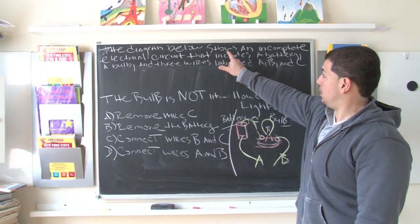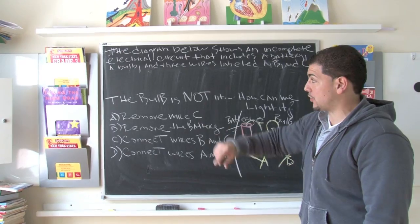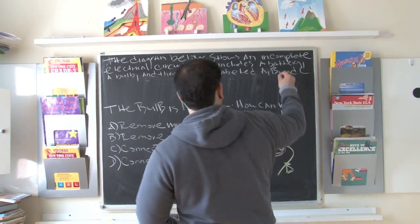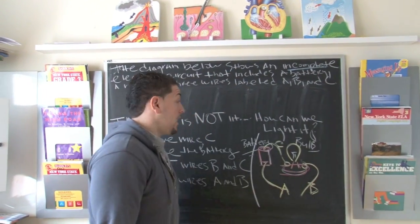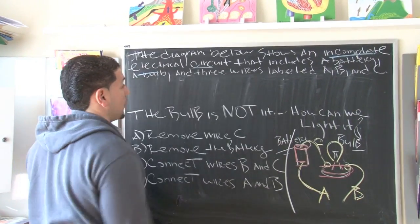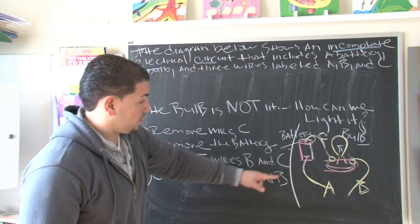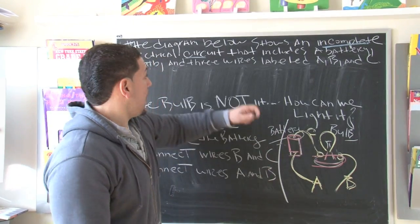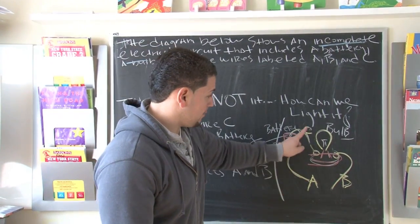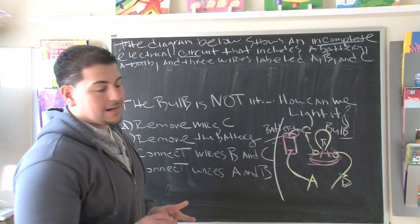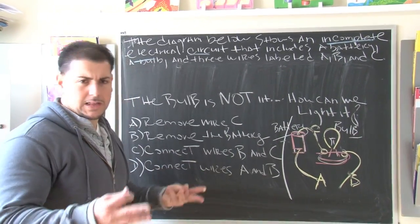The question says, the diagram below shows an incomplete electrical circuit. Incomplete, which means there's something missing, and it's an electrical circuit that includes a battery, here's your battery, a bulb, here's your bulb, three wires A, B, and C. So these are the main instruments that you need to complete the circuit.